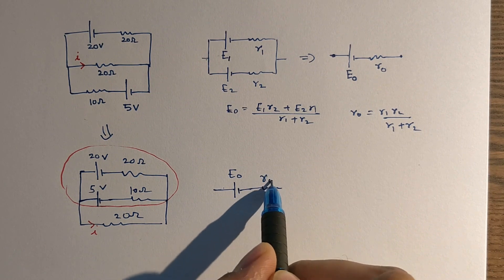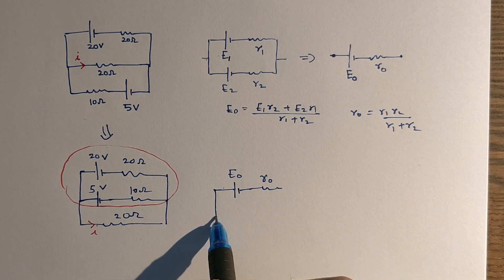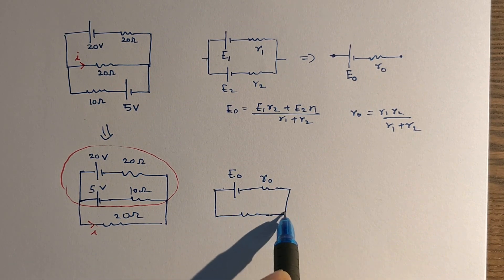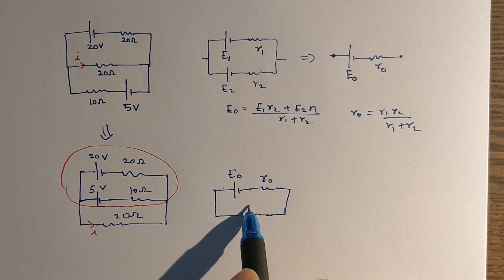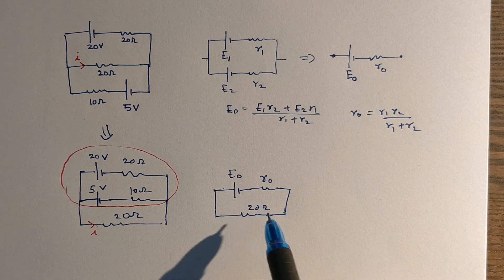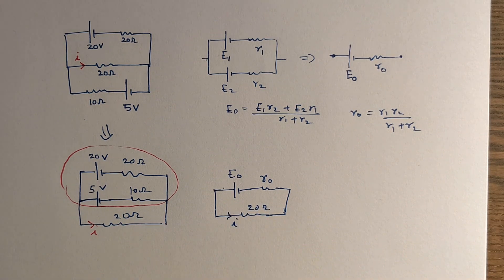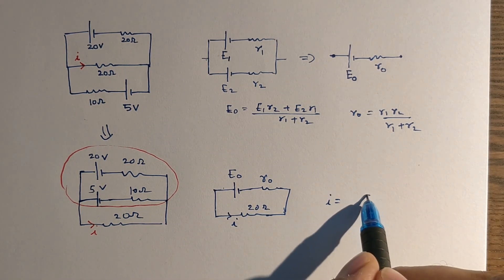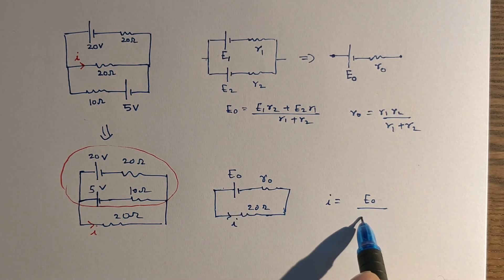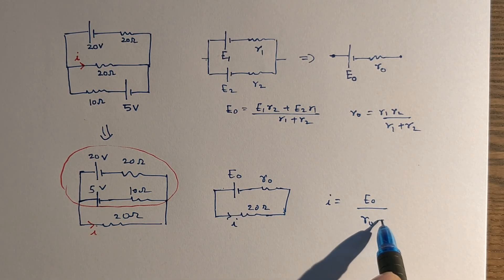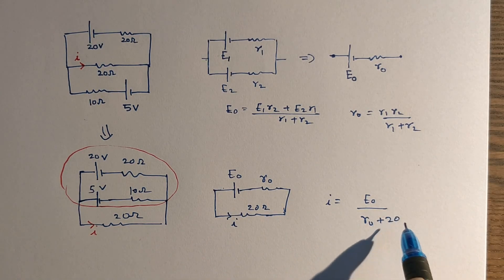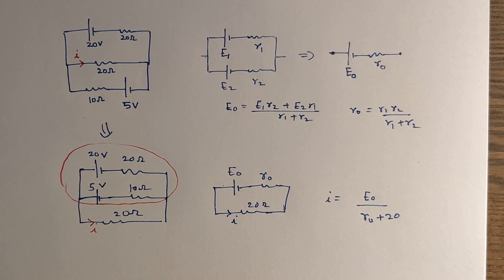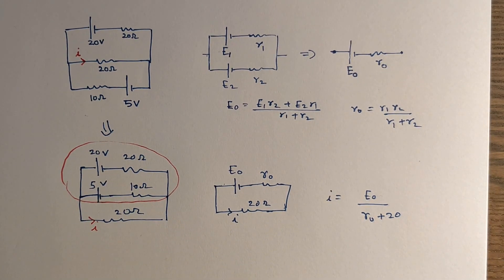Instead of these two batteries, I can write an equivalent EMF E-naught and equivalent internal resistance R-naught. Once I've done that, the problem becomes very simple. The current is nothing but E-naught divided by the total resistance, which is R-naught plus 20. So all I need to find is E-naught and R-naught using the formula.